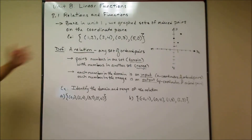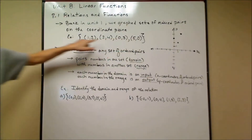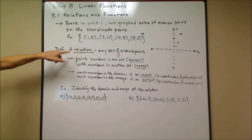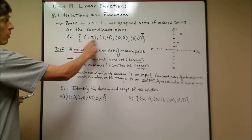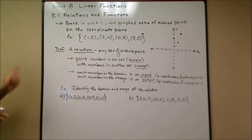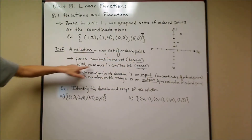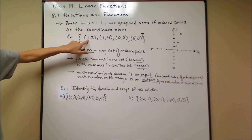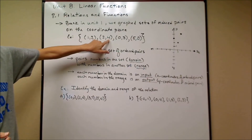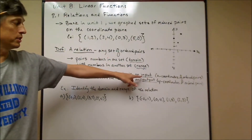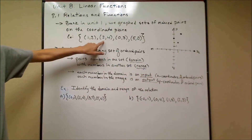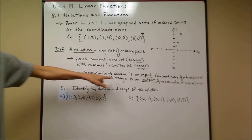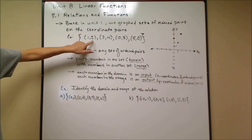That's an example of graphing we did a long time ago in Unit 1. Well, this set of ordered pairs has a name — it's called a relation. A relation is any set of ordered pairs. The x-coordinates come from a set called the domain, sometimes called the input, and the y-coordinates come from a set called the range, also called the output. So the domain values are 1, 2, 0, and 5, and the range values are 2, 4, 3, and 0.